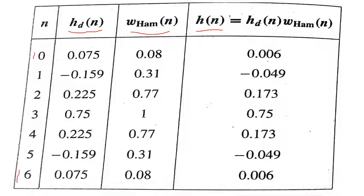To get the first value for N equals 0, in the previous equation of HD of N we substitute small N as 0. And kindly remember the calculator should be kept in radian mode.